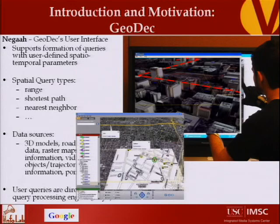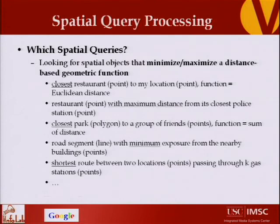Now, how my research fits in the whole system: I am targeting special query processing. I'm mainly interested in those special queries that look for spatial objects in a database of objects that minimize or maximize a distance-based function — a geometric function. For example, let's say this is my location, x, y, latitude, longitude. Give me the closest restaurant to this location. That's a very simple sample of the queries I'm targeting.